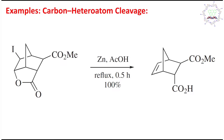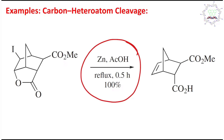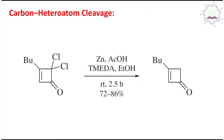The second example is an iodolactone derivative which is similarly reduced in the presence of zinc and acetic acid. The mechanism is the same as before, and ultimately results in alkene formation. The overall reaction shows 100% conversion within 30 minutes under refluxing conditions.